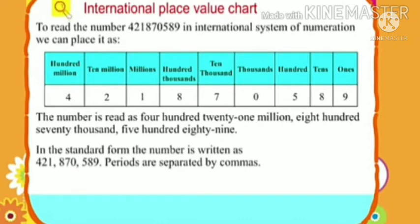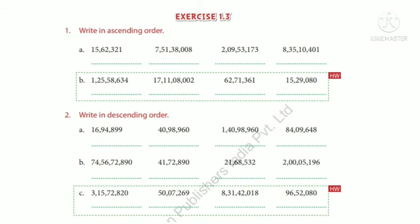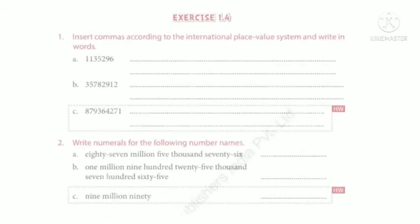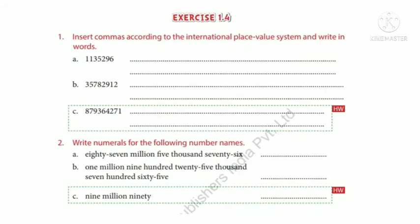In standard form, the number is written as 4,21,870,589 — periods are separated by commas. Dear children, some homework for you: see page number 83, Exercise 1.3 — question 1: write in ascending order; question 2: write in descending order. Next, see page number 85, Exercise 1.4 — question 1: insert commas according to the international place value system and write in words; question 2: write numerals for the following number names. You must do this homework.